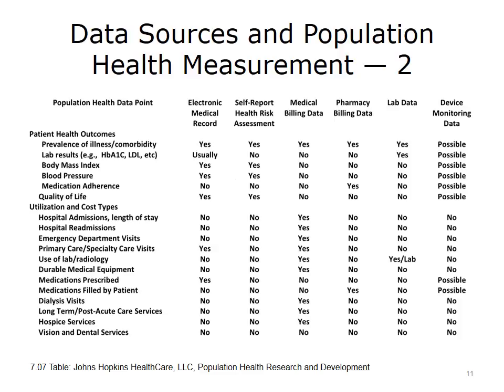Continuing with the data sources table: from electronic medical records, we can get prevalence of illness and comorbidity, lab results, measurements of body mass index, and blood pressure. Medication adherence is not usually included in an electronic medical record unless specifically measured by a provider. Results from quality-of-life surveys can be found on EMRs. What we cannot generally get from electronic medical record data is information related to hospital admissions, lengths of stay, readmissions, or emergency department costs and utilization. We can generally get primary care and specialty care data, lab and radiology utilization — though often not costs — prescribed medications, but not medications that have been filled by the patient. Dialysis visits, post-acute care, hospice services, and vision and dental services are often not recorded in an electronic medical record.